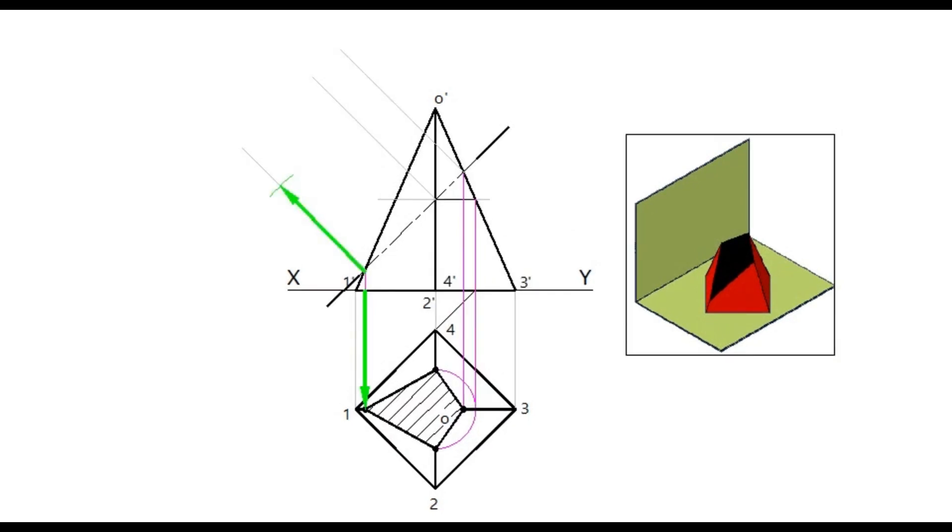Measure the distances of each of the points from the plan and transfer it to the perpendicular lines drawn from the cutting plane. Join these points by straight lines.